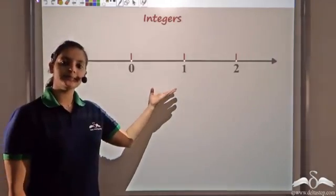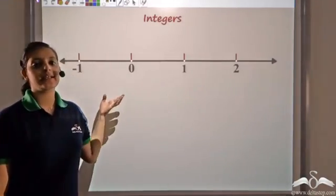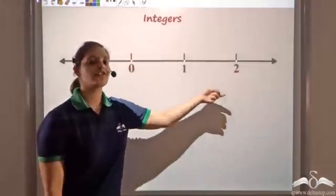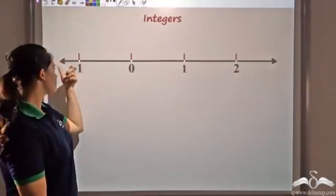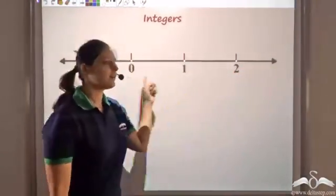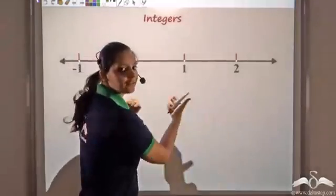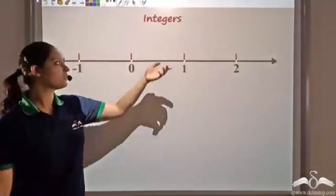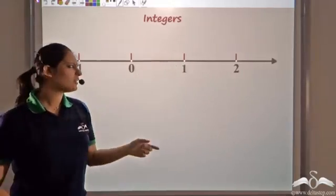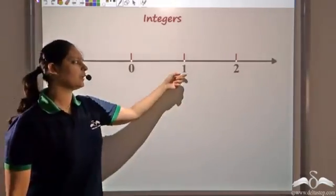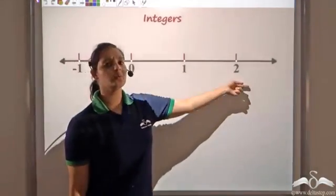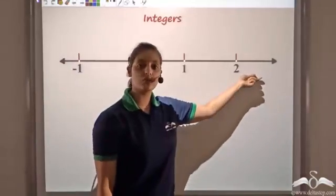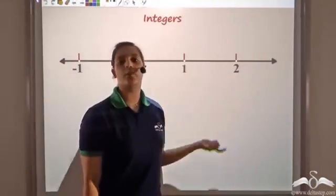This is the number line representing integers. These are points which are numbers representing all the integers. Both sides have an arrow depicting that they are infinite in both directions. So these are the infinite numbers which are integers. Now, can you find an integer between 1 and 2? Clearly not. After 1, the next integer is 2, so there is no integer between 1 and 2.